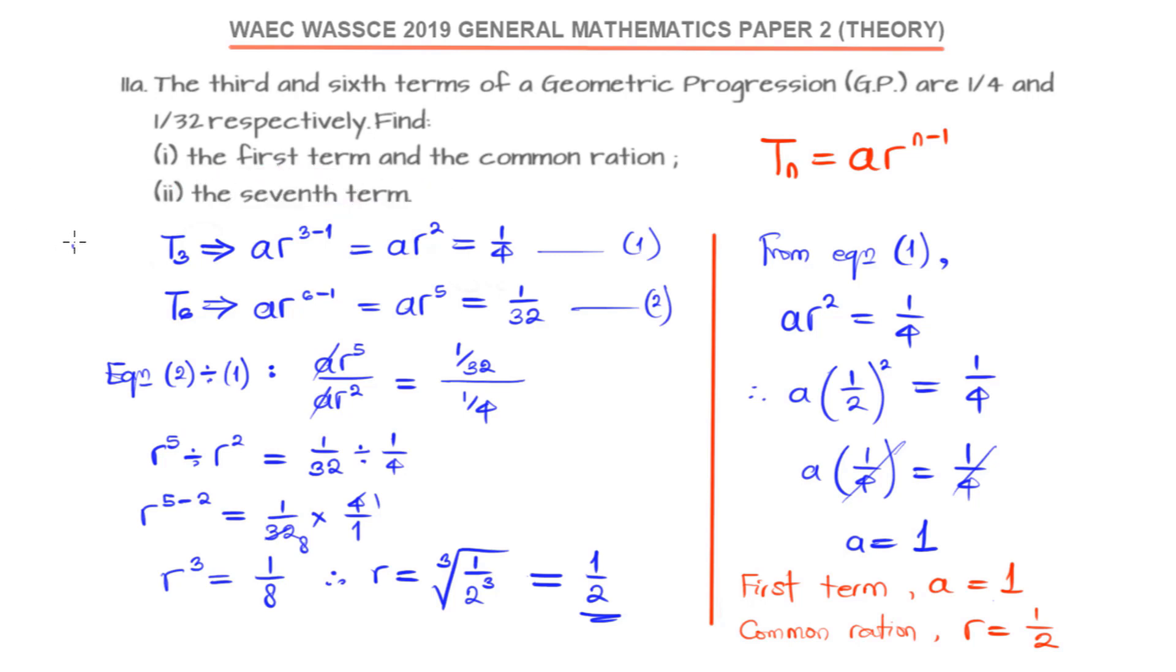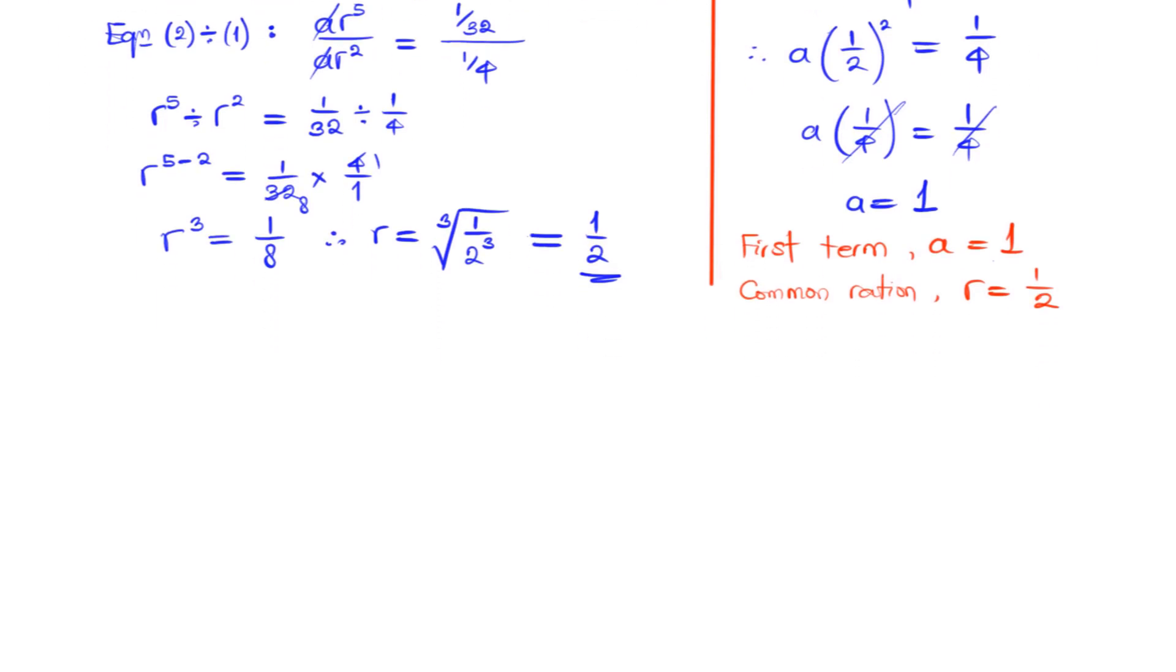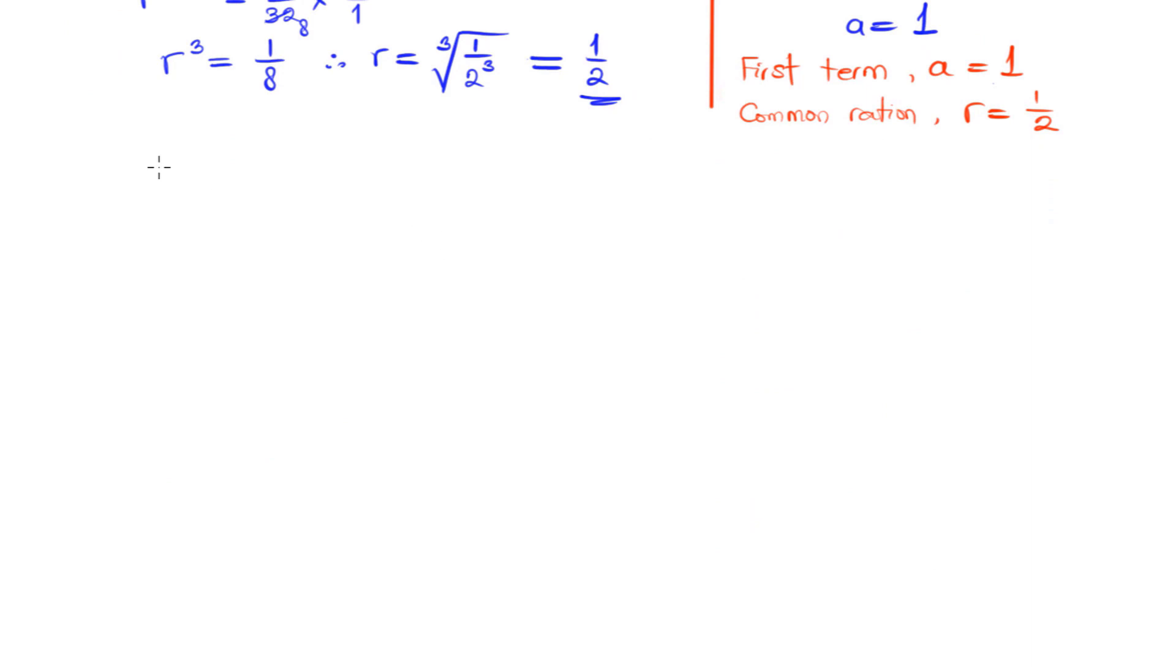T_n equals A times R raised to power n minus 1. Since we know A, the first term, and we also know R, the common ratio, we can find the seventh term. So the seventh term, T_7, equals AR raised to power 7 minus 1.